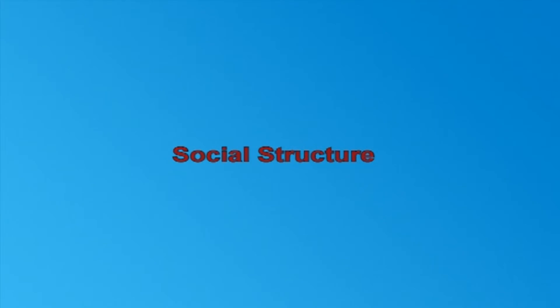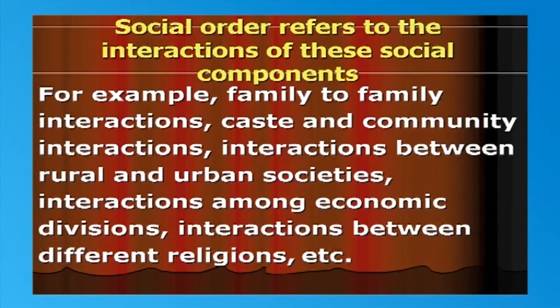Let us now look into social structure and social order. It is necessary to understand the social structure and the social order before proceeding to an analysis of the sociological background of crime. Social structure refers to the various components of a society. Any society at any time has its own structure and order. The components of social structure are family and family system — that is, joint families or single families — caste, communities, and rural-urban societies, components of rural and urban population, economic system, administration, religion, customs and conventions, institutions like marriage, family festivals and rituals, police system, educational institutions and educational system.